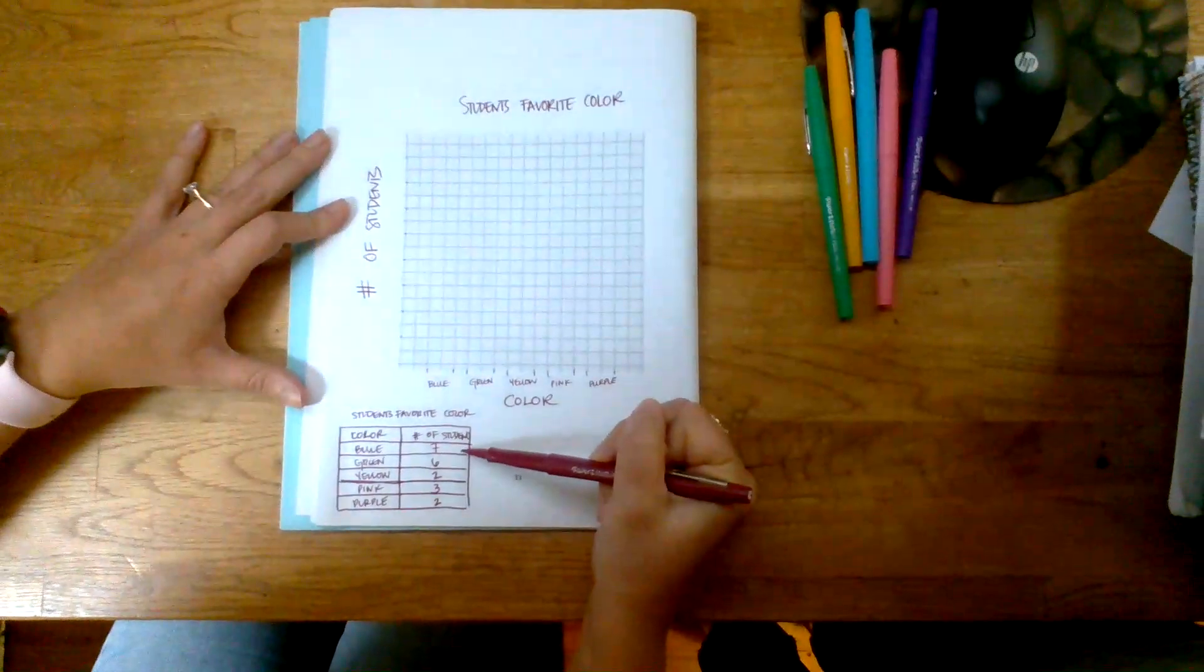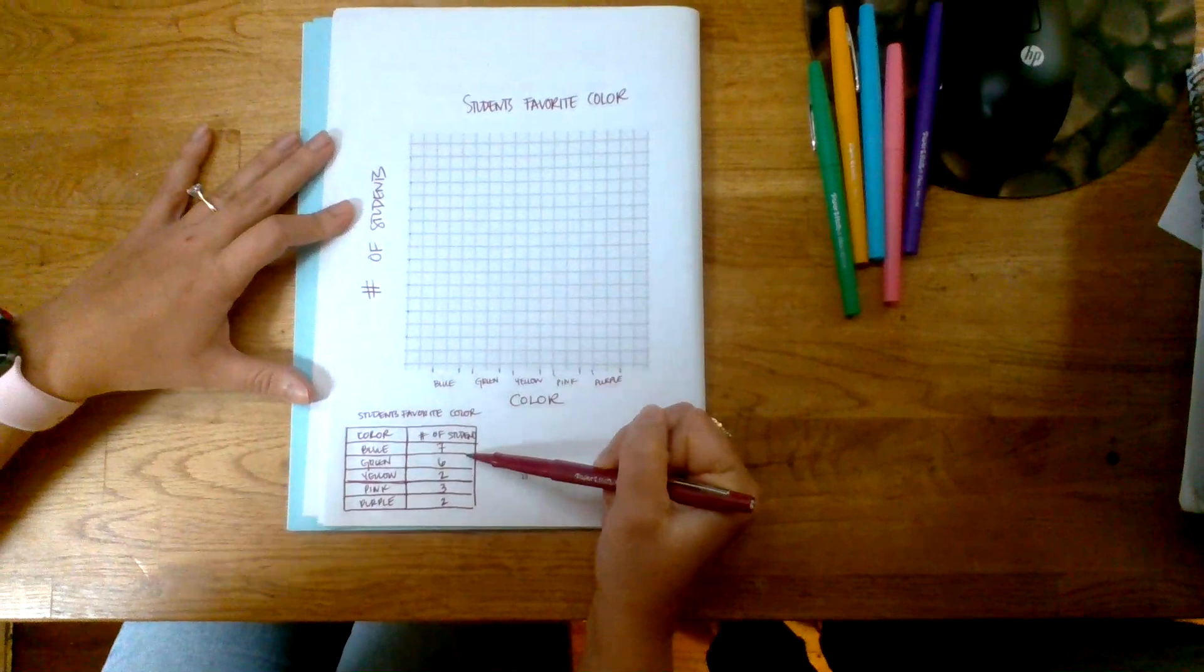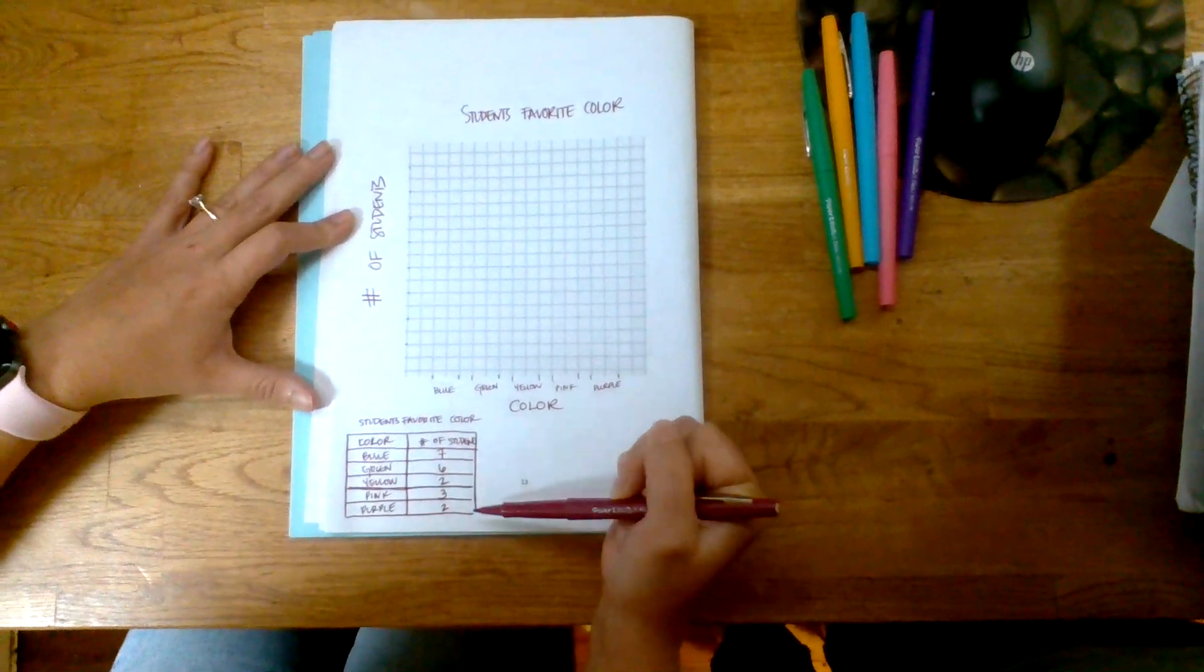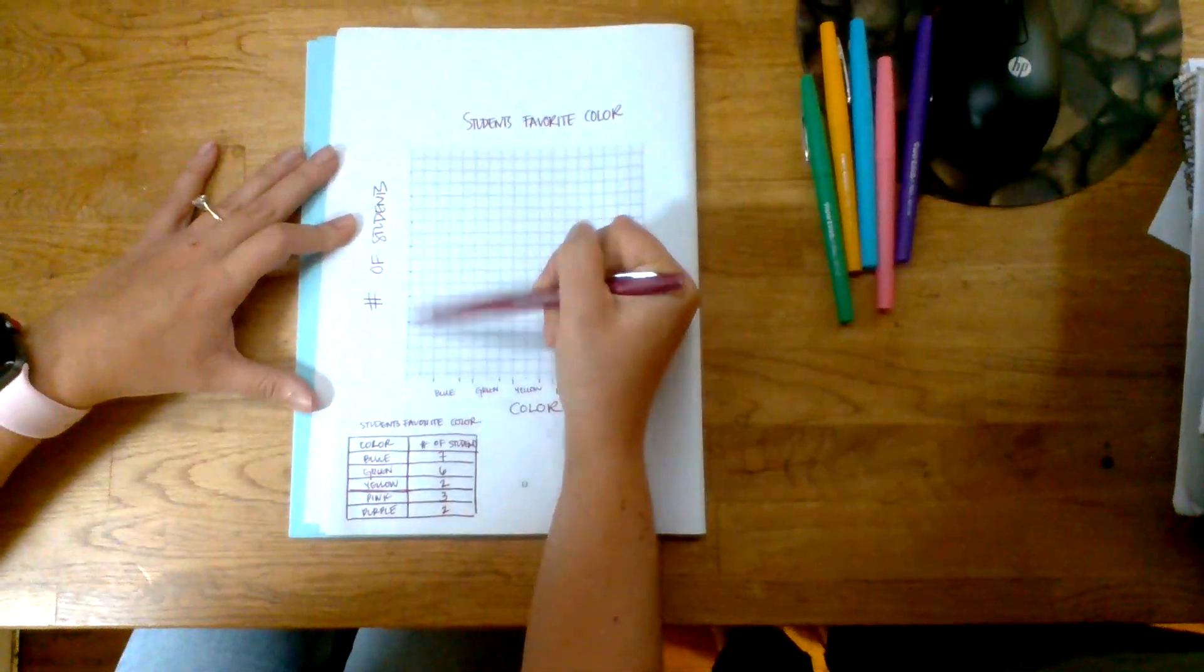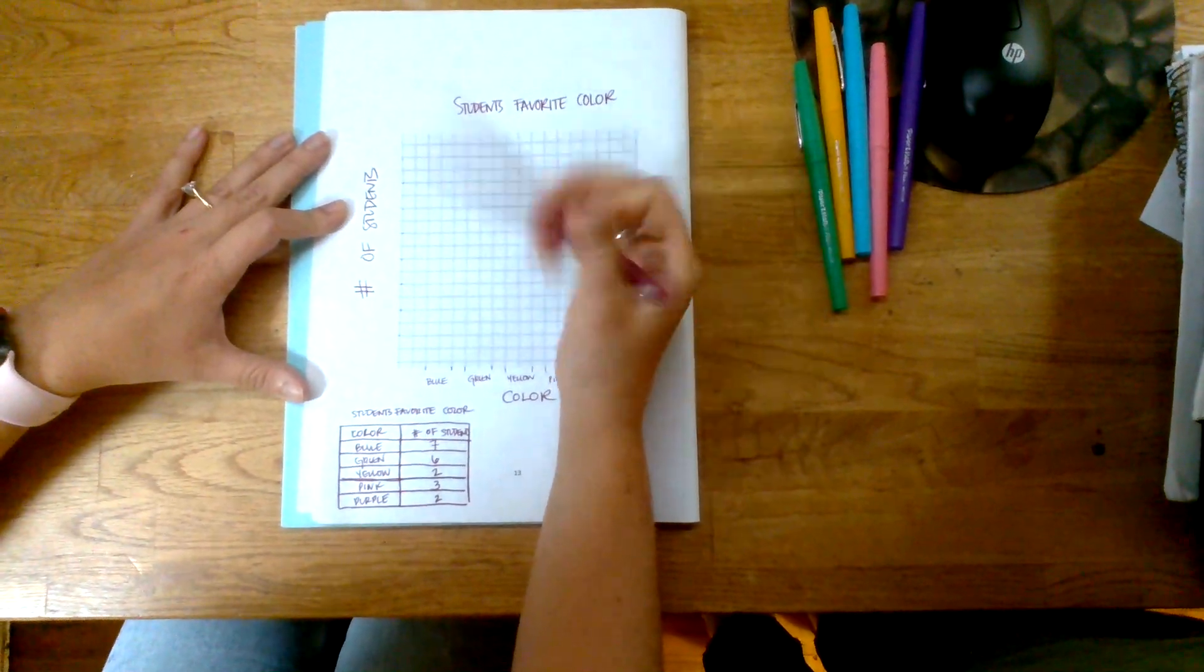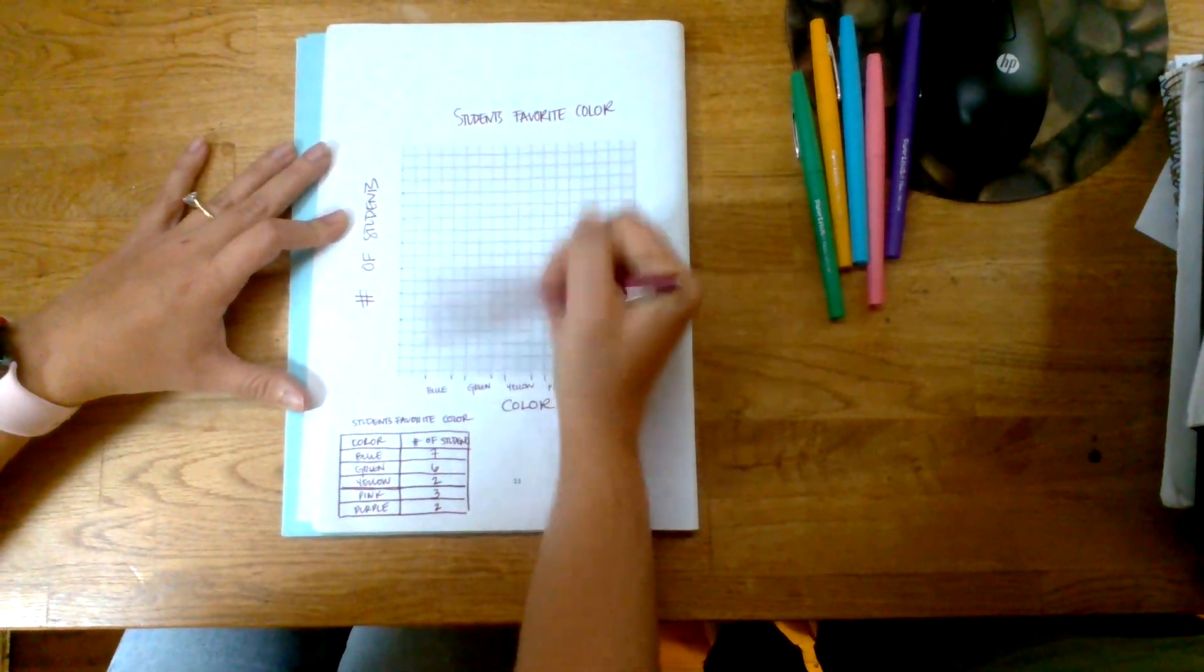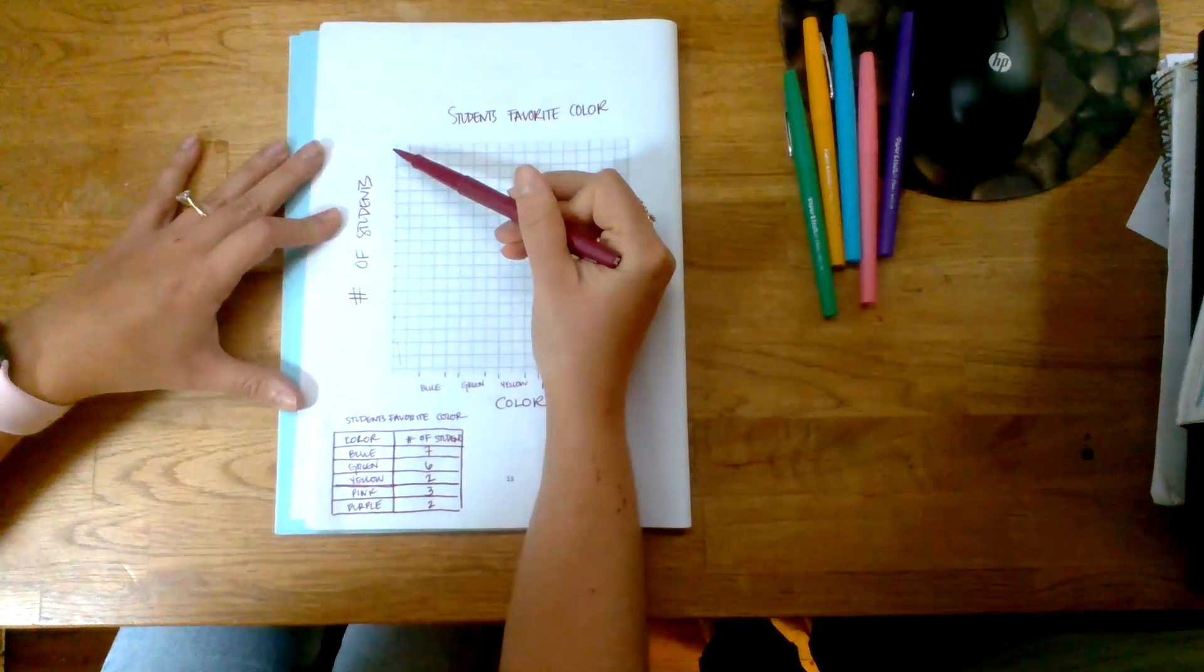The highest number we get to here is seven. I always like to go at least one above the highest number you see on the data table, so you want to make sure you can go all the way up to eight on your y-axis.